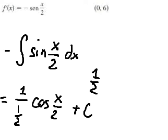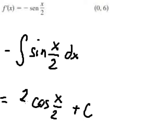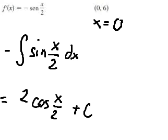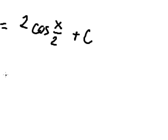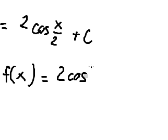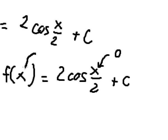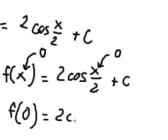And I will put about C. Now we have the point: when x equals 0, f of 0 equals 6. So now we have the function. When we put x equals 0 here, we have f of 0 equals 2 cosine of 0 over 2 plus C.